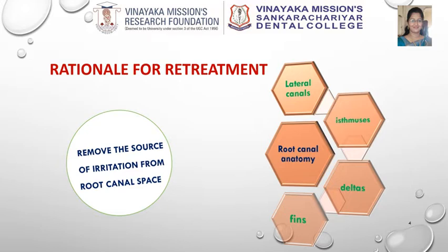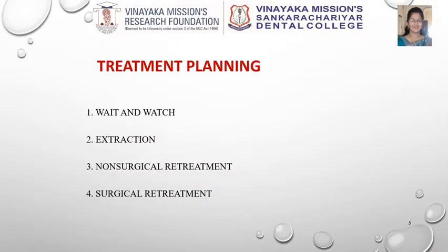A prime rationale of retreatment is to remove the source of irritation from the root canal space. Such failed root canal treated teeth have four treatment options: first, we can wait and watch without any vital treatment; second, we can extract the involved teeth and replace with artificial prosthesis; or retreatment can be done either non-surgically or surgically.